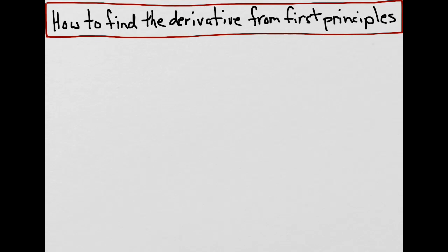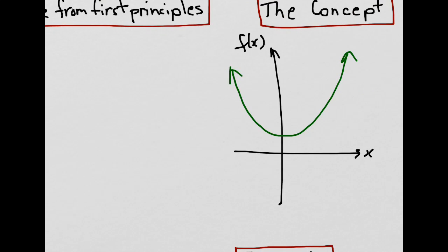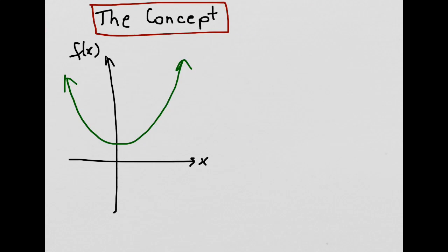The derivative of a function is the slope of the tangent line at any point on the graph of that function. Let's say we wanted to find the derivative of this function at this point right here. A tangent line touches the curve at one point only, so our tangent line would look something like this. We can then determine the slope, which would represent the derivative of this function at that point. The problem is we're kind of guessing where the tangent line would be, so how do we do this more precisely?